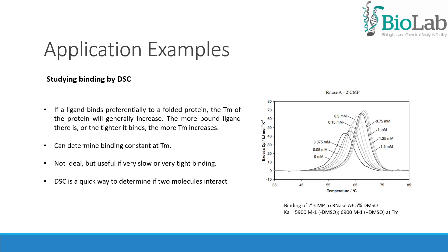DSC is a quick way to determine if two molecules interact. In this example, the binding constant of CtDN2-phosphate to RNA was determined.